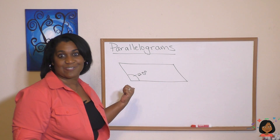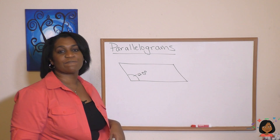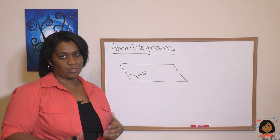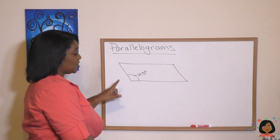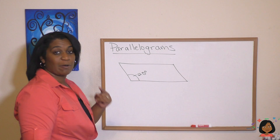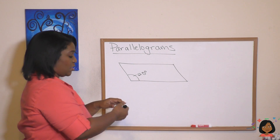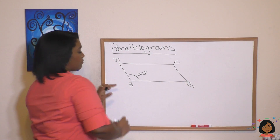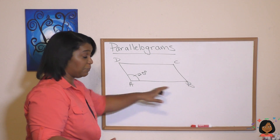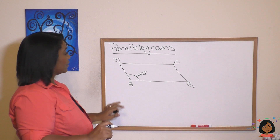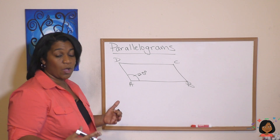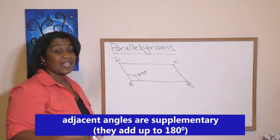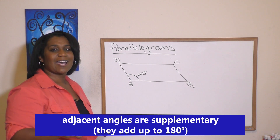So back to our 125 degrees. How can we use this to find the other angles? I'm going to label the angles A, B, C, and D. The first thing I want to introduce is that the adjacent angles of a parallelogram — remember, adjacent means the ones next to each other — are supplementary angles, meaning they add up to 180 degrees.